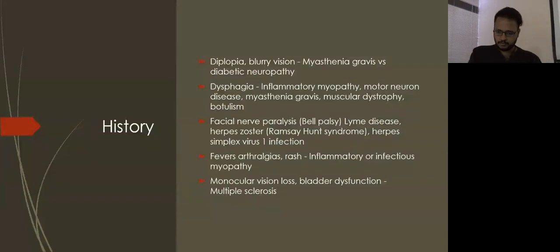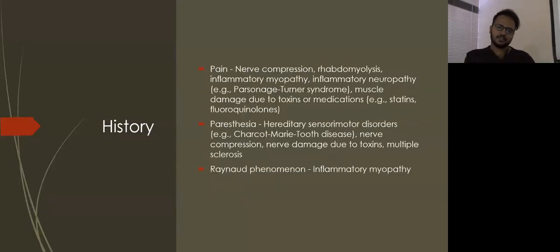Let's briefly look at the approach to weakness. In history, we have to differentiate with the help of history and physical examination. If there's involvement of diplopia or blurry vision, consider myasthenia or diabetic neuropathy. Dysphagia - consider MND or inflammatory myopathy. Facial paralysis - consider herpes zoster. Fever, arthralgia, rash with weakness - think inflammatory versus infectious myopathy. Monocular vision loss or bladder dysfunction should alert us towards multiple sclerosis. Pain - think nerve compression, inflammatory myopathy, inflammatory neuropathy. Paresthesia - hereditary, toxins, or MS. Raynaud's phenomenon - inflammatory myopathy.